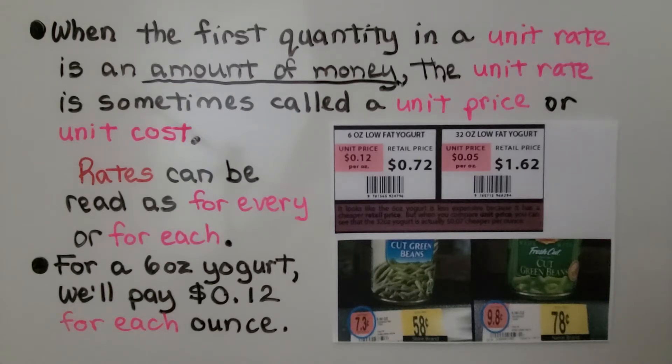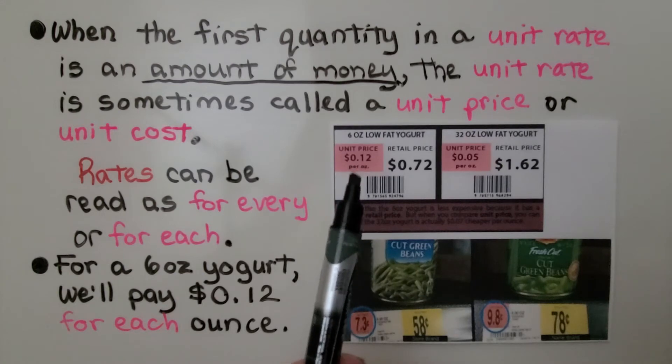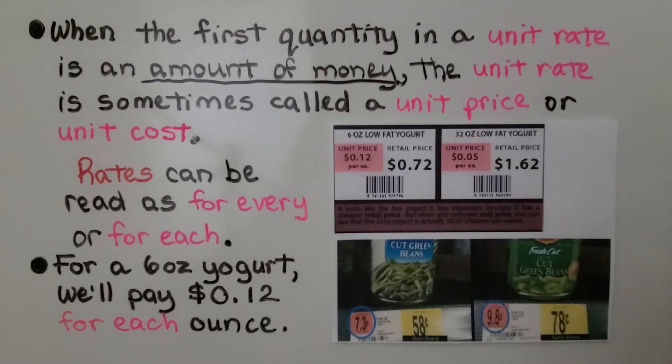Rates can be read as for every or for each. So for a 6 ounce yogurt, we'll pay 12 cents for each ounce. That's the unit price, the unit rate. It's the price per ounce.